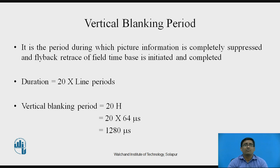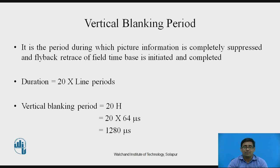The vertical blanking period is the period during which picture information is completely suppressed and flyback retrace of the field timebase is initiated and completed. The duration for vertical blanking period is 20 line periods. The formula is: vertical blanking period = 20H = 20 × 64 microseconds = 1280 microseconds.